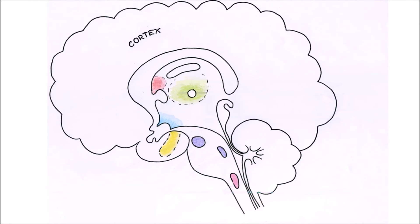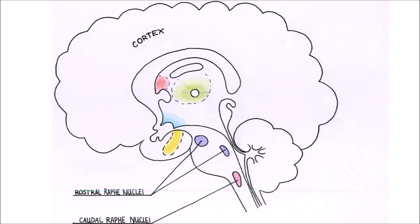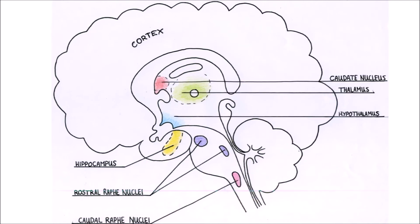A third possible way of entering torpor is via the pathways in the brain responsible for regulation of body temperature and metabolism. While there is a basic understanding of some of the involved areas, like the raphe nuclei and the hypothalamus, the exact pathway is still unknown.